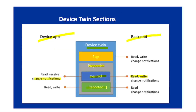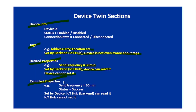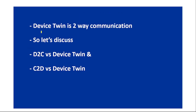Then we have reported properties. The backend can only read them, but the IoT device can read and write them. For example, if the IoT app set a desired frequency of 30 minutes, under reported properties the device can respond with send frequency equal to 30 minutes and status equal to success — confirming the desired property was successfully applied. Using reported and desired properties, IoT app and IoT devices communicate in a two-way fashion.